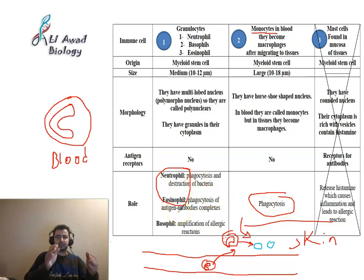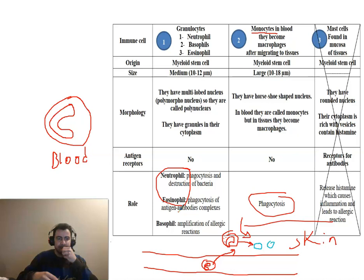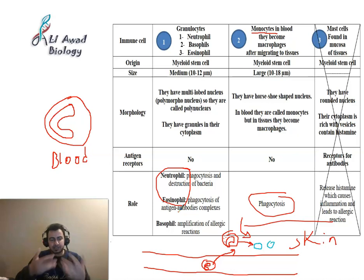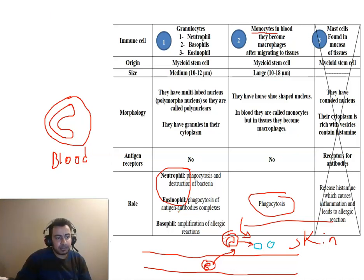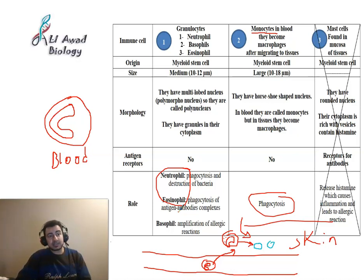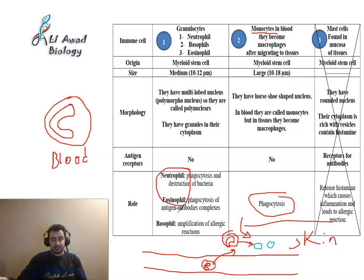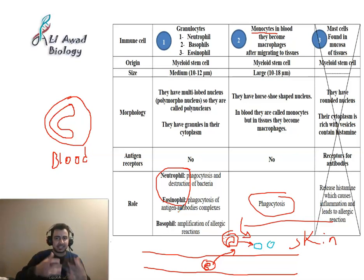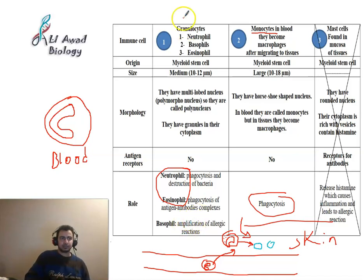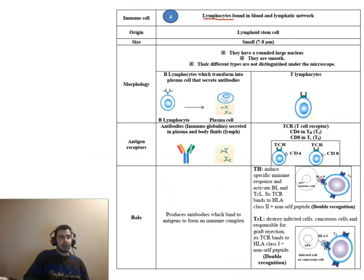Macrophages, like granulocytes, are also non-specific. They are non-specific because they don't depend on the intruder's identity — they attack quickly without recognizing the specific cell they are attacking.